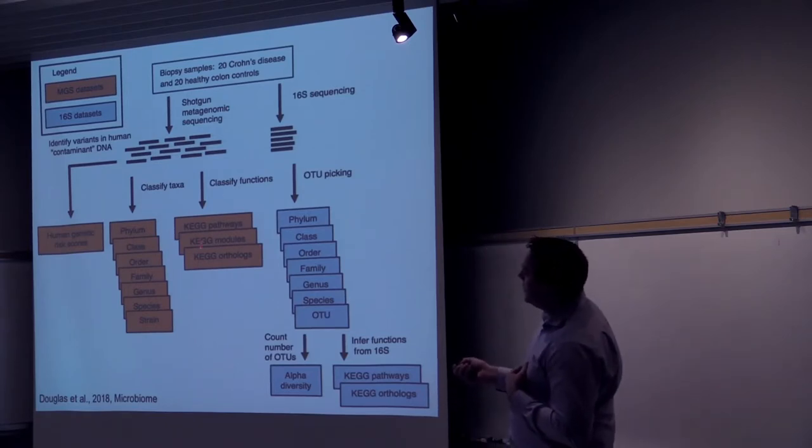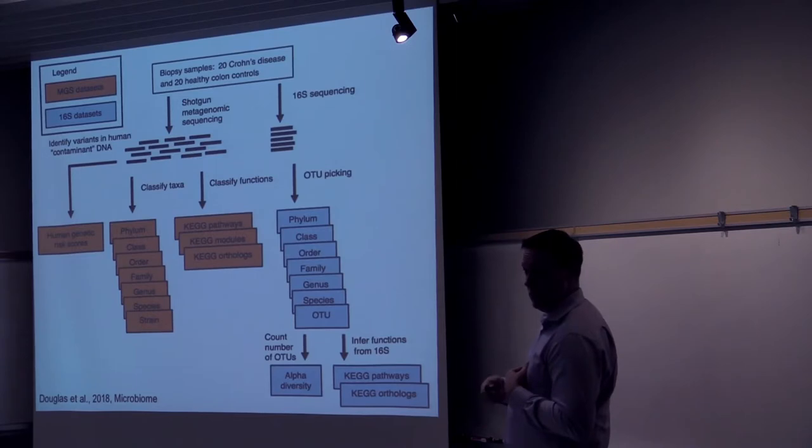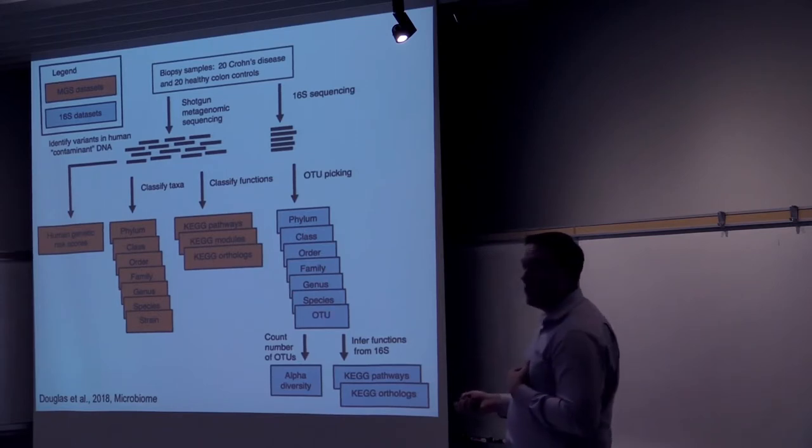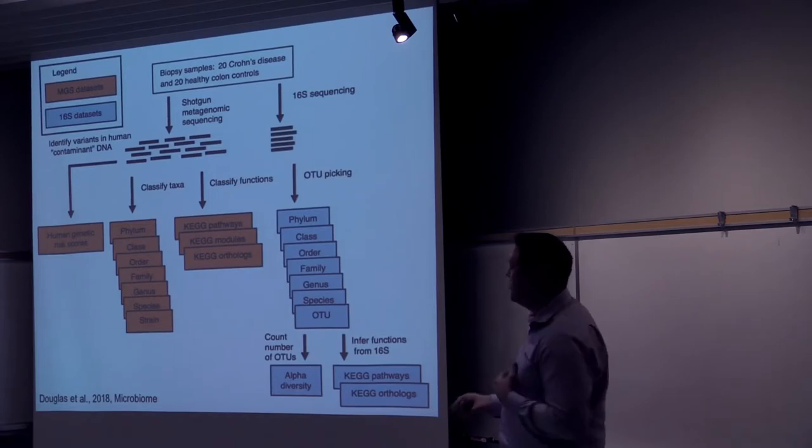So we want to compare this data type to, basically, these different types of data from the metagenomics, just right from phylum down the screen. If you haven't taken a biology course in a while, King Philip Came Over For Ginger Snaps. He came over for others in our acronym. And then, also, from the functional side, we looked at KEGG pathways, modules, and orthologs. And then, from the 16S data, similar data for the taxa, as well as alpha diversity, so looking at the number of OTUs, and then the predictions from PyCrest.